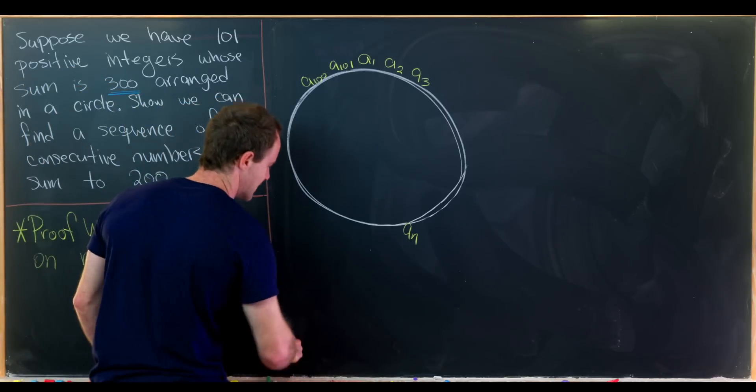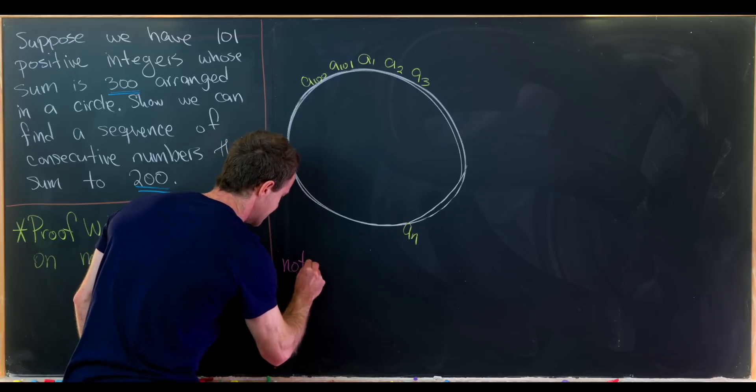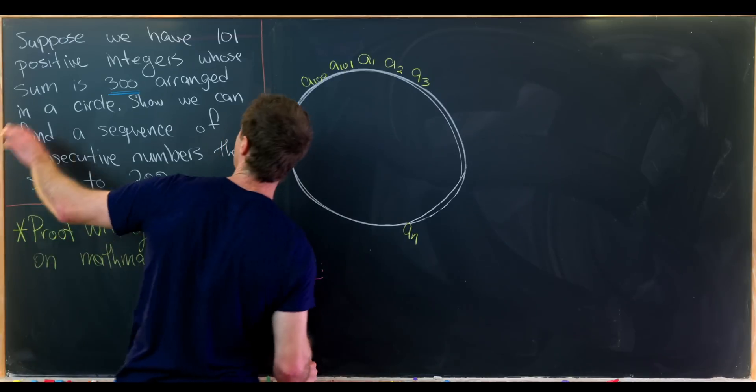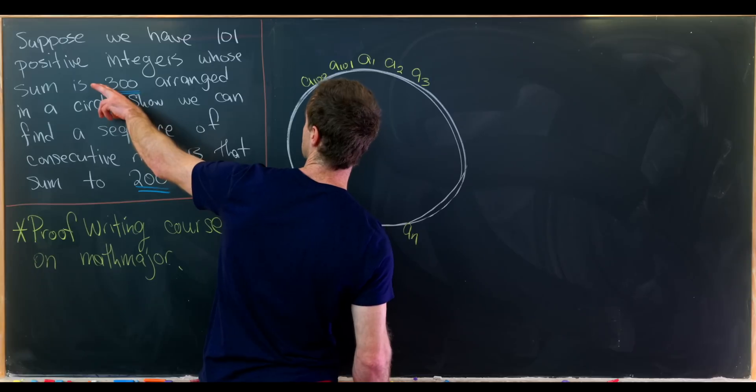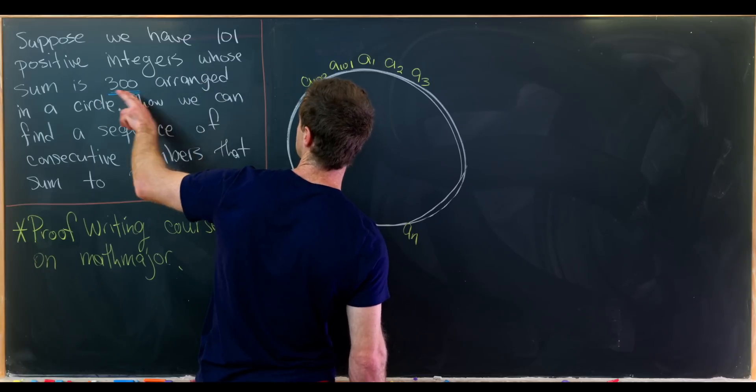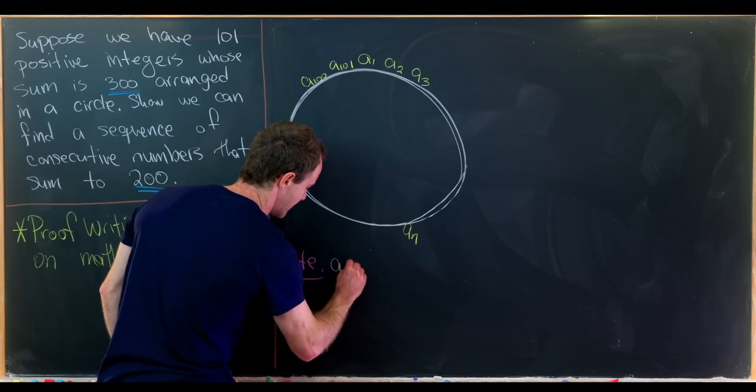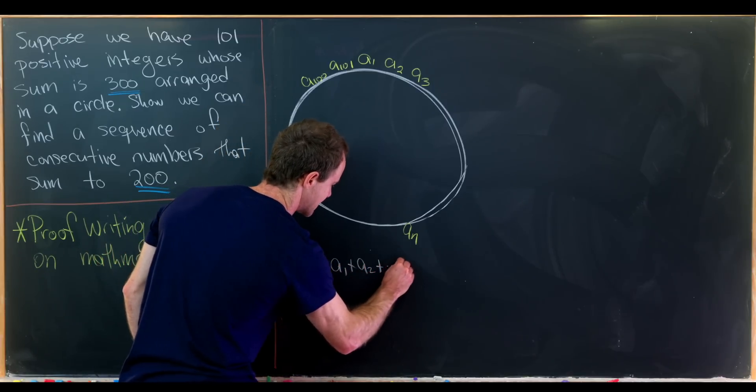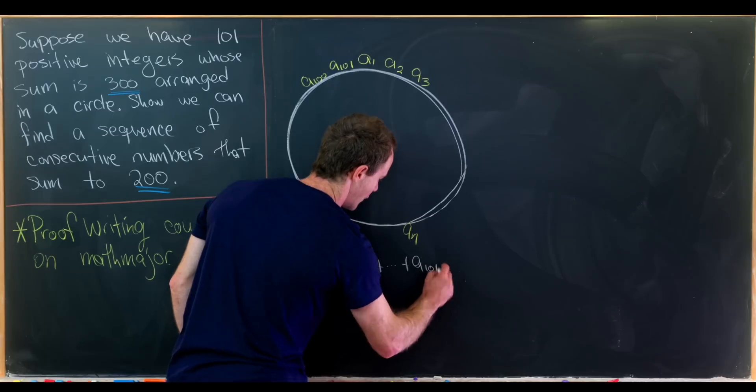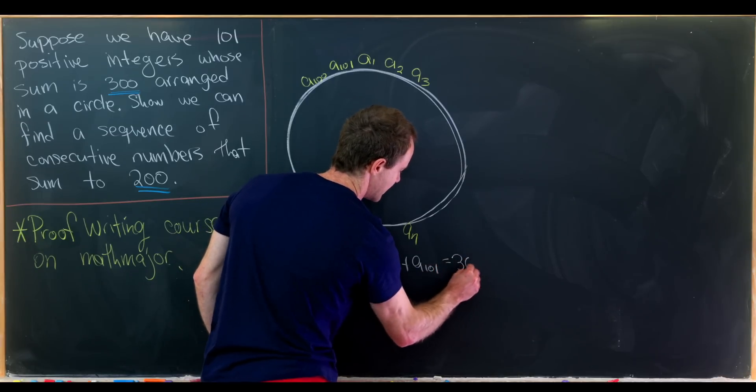So we've placed all of the numbers around the circle. And then let's also make a little bit of an observation. And this observation is based off the information given to us. So there are positive integers who add to 300.